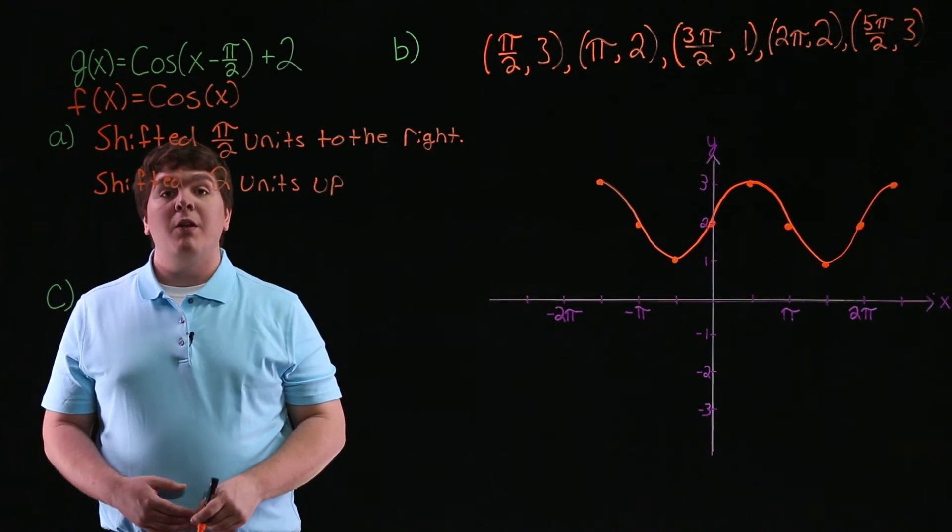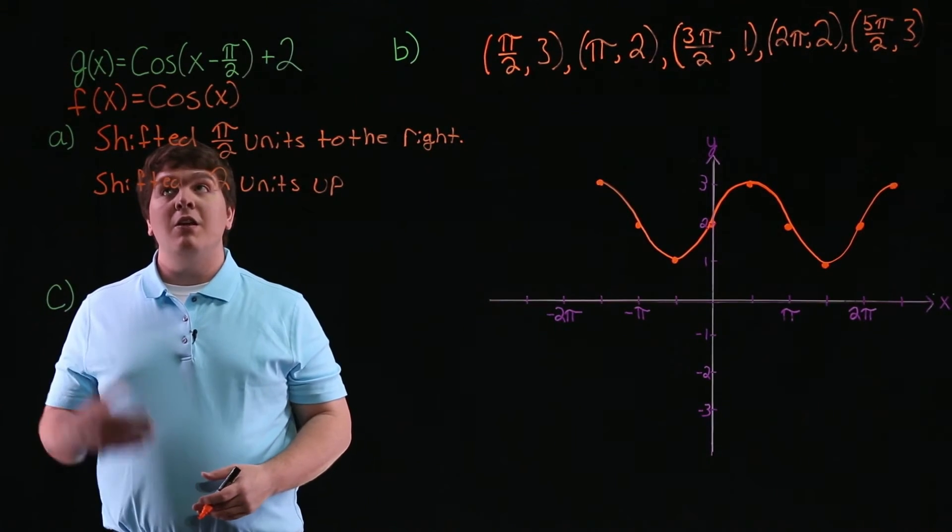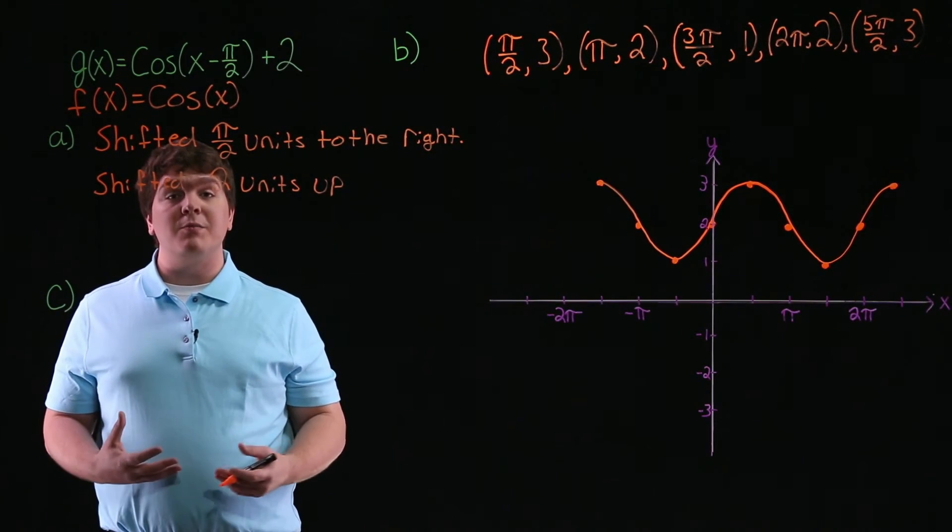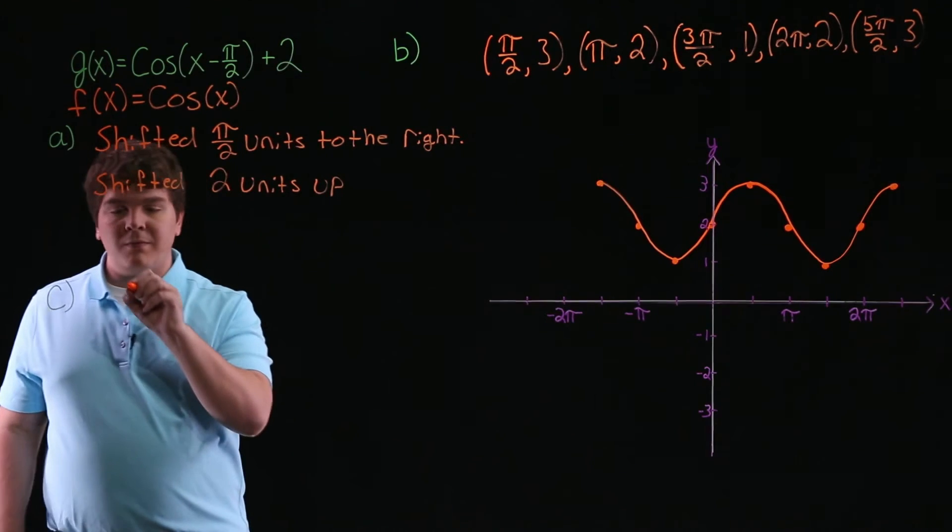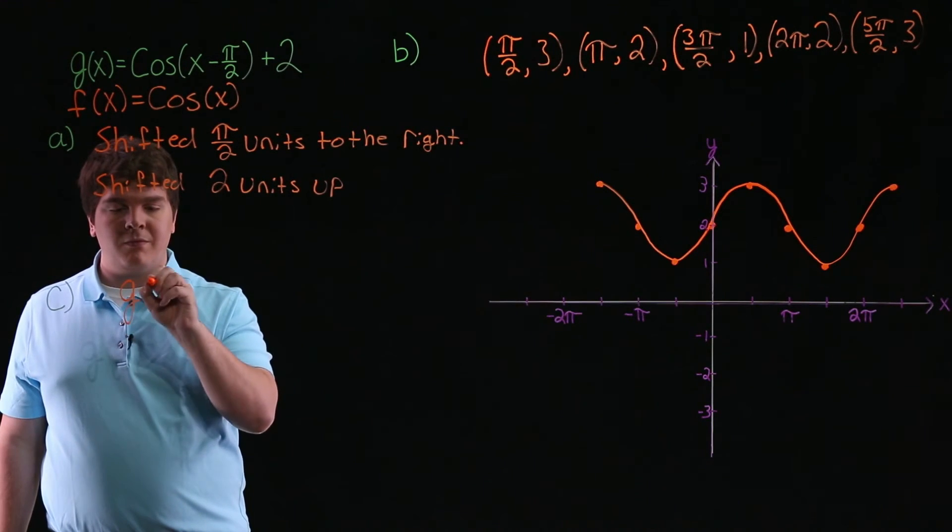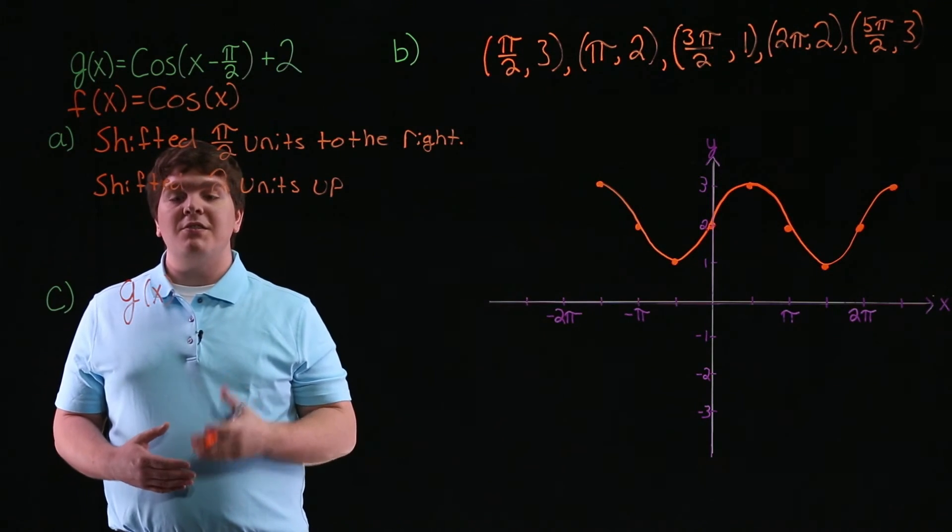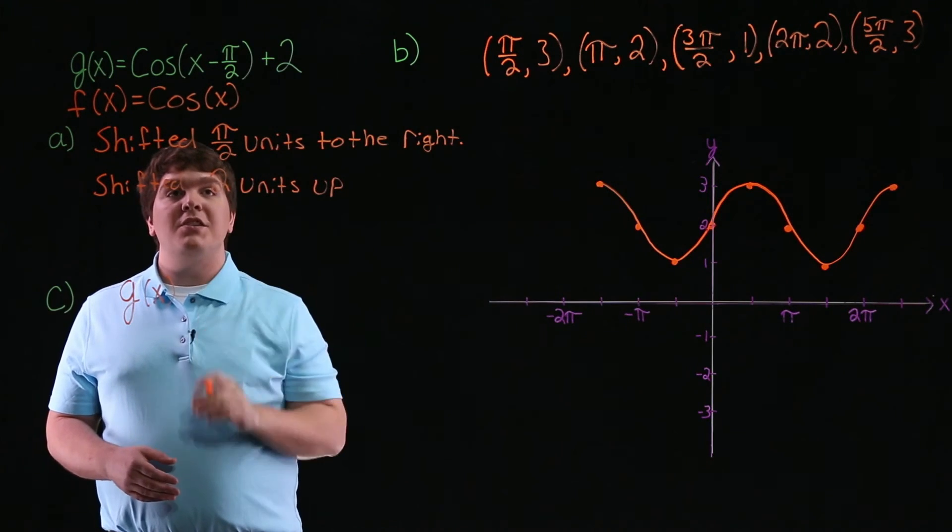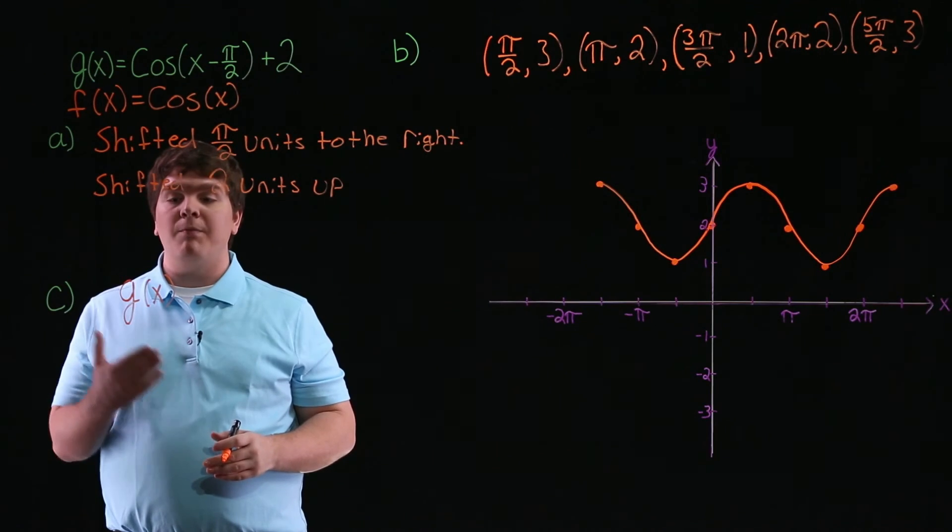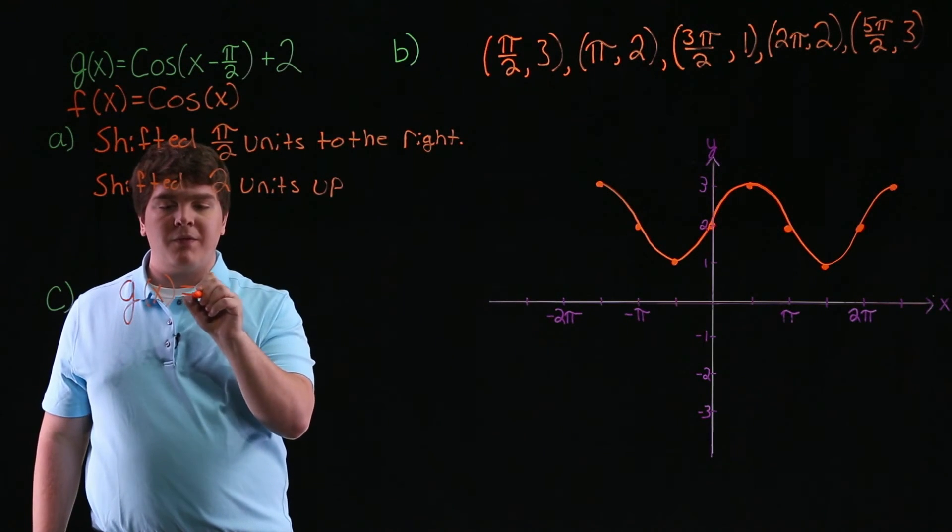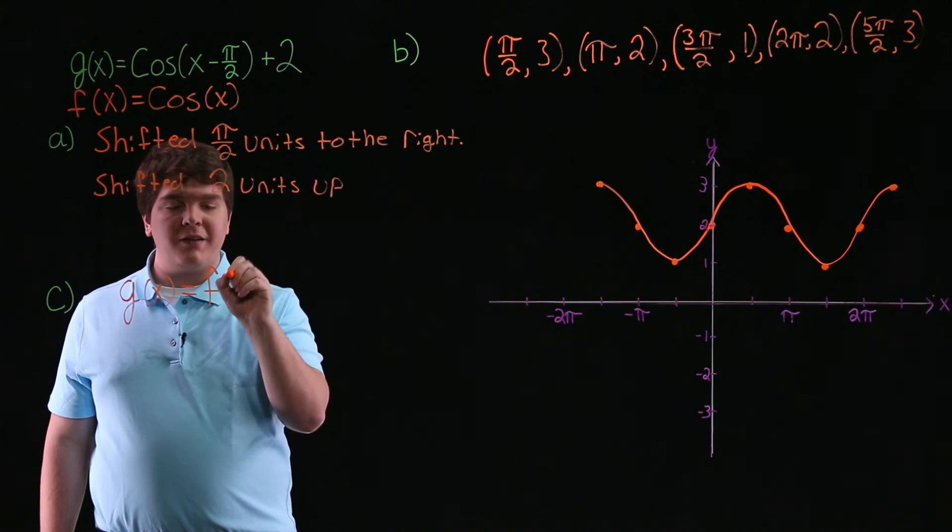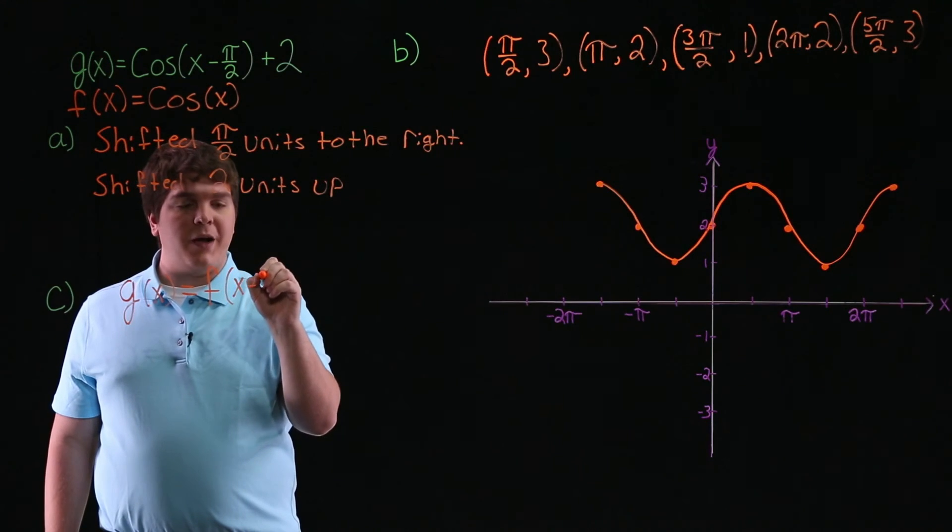For part c of this problem, we're asked to use function notation to write g of x in terms of f of x. So going back to part a, since g of x is f of x shifted pi over 2 units to the right, we have that g of x is going to be equal to f of x minus pi over 2.